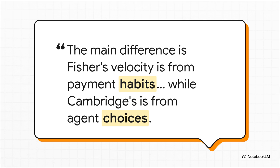Fisher's velocity is determined by payment habits. That's the institutional, mechanical part. But Cambridge's velocity is determined by economic agents' choices. That's the human, behavioral part. See how this answer doesn't just list the two definitions. It zeroes in on that single most important point of contrast. That is the kind of sharp analysis that gets you the highest marks.